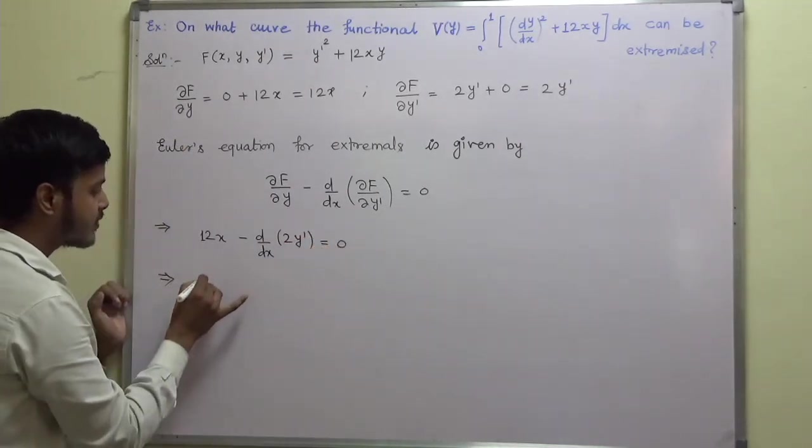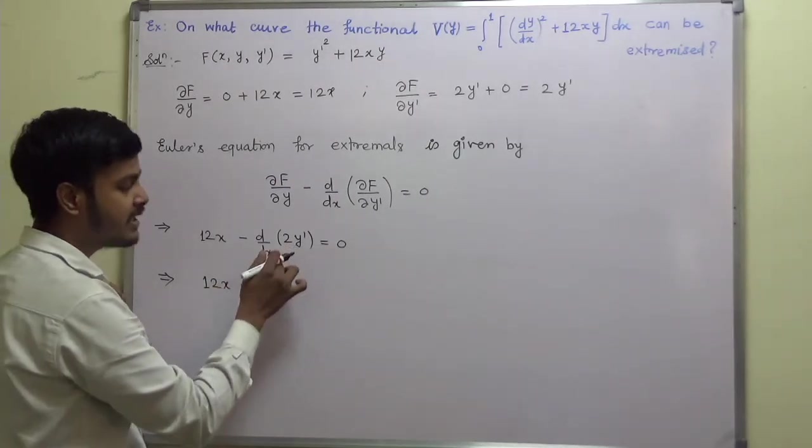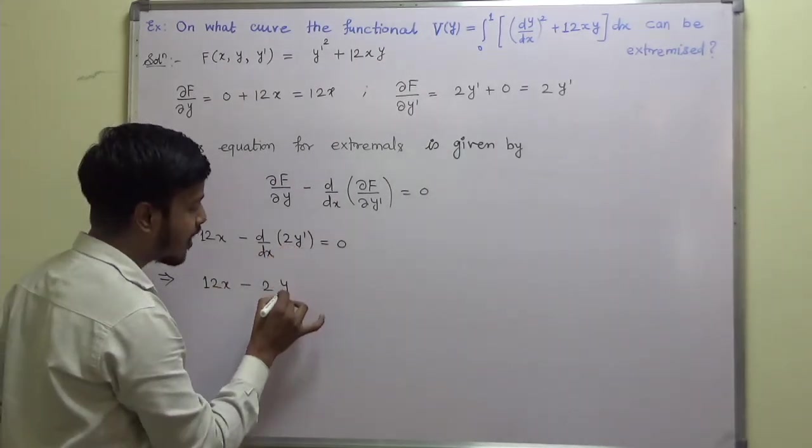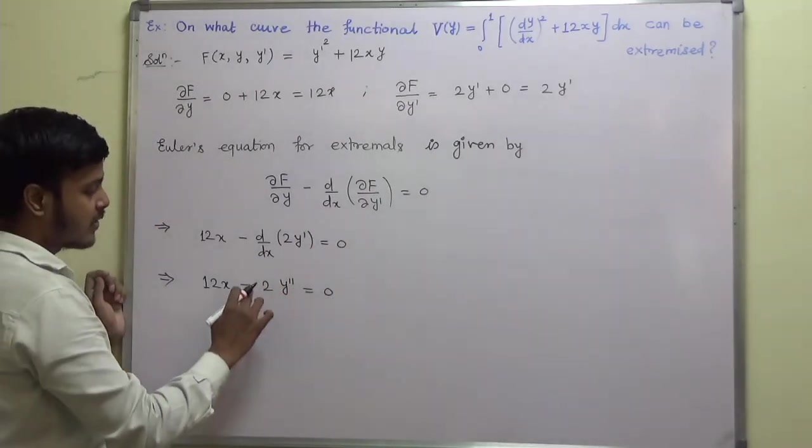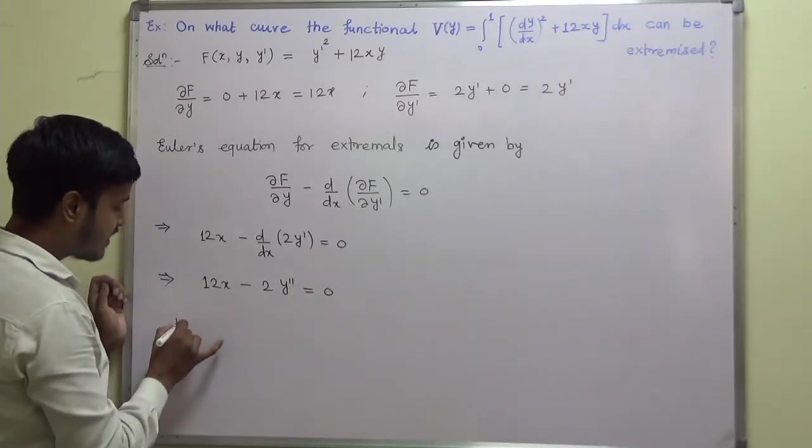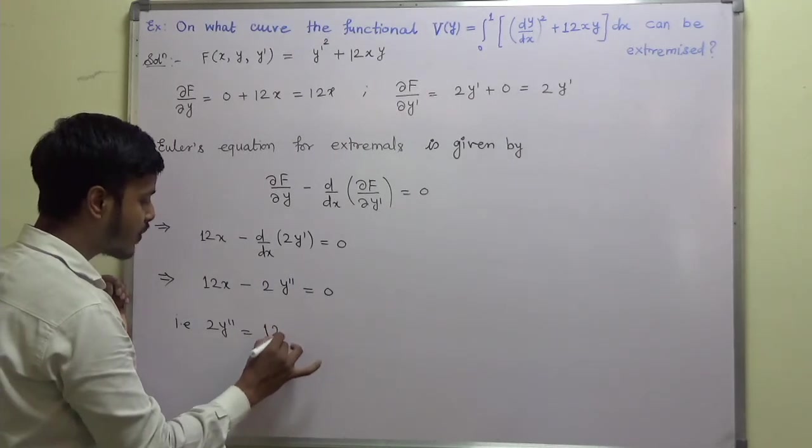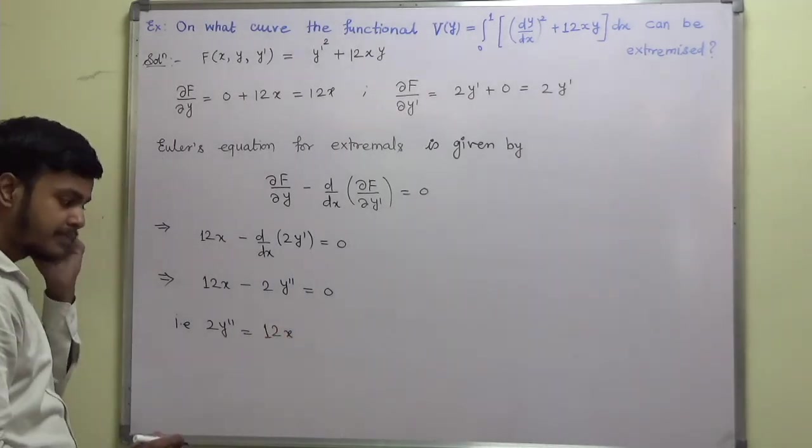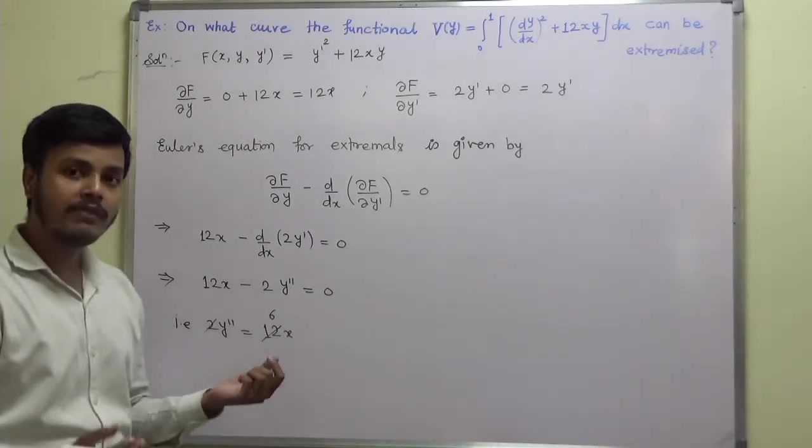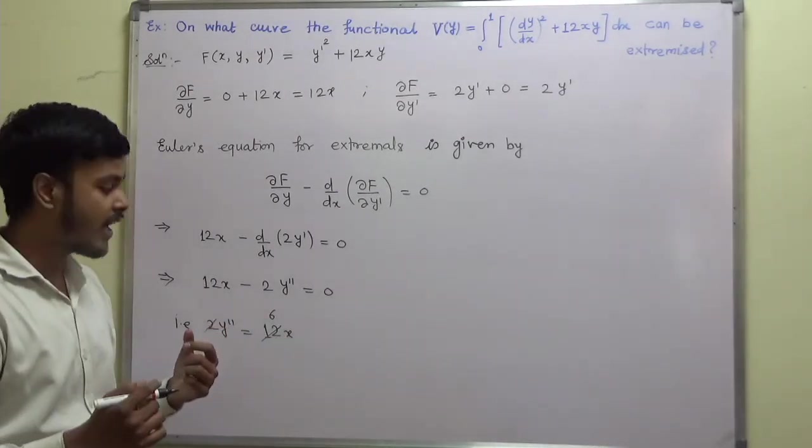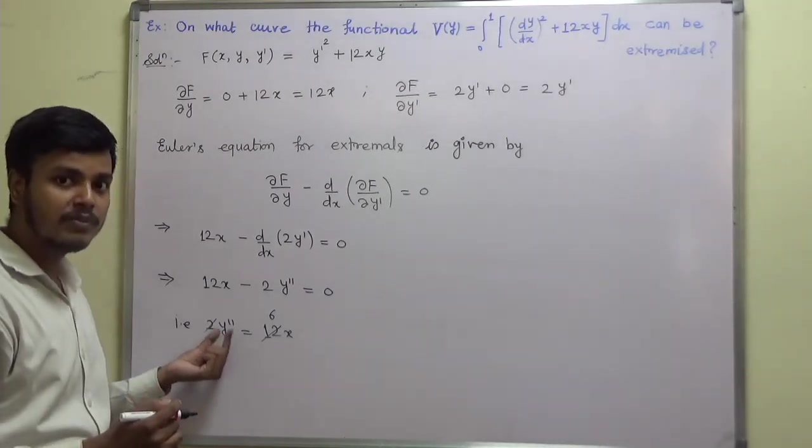Solving further to this, we will get 12x minus 2 times, what is d/dx of y'? y'' is equal to 0. So you can just take this 2 here and write it as 2y'' is equal to 12x. Now, you can just cancel out this. What we want? We want the curve y is equal to y(x). What we have? Derivative. So to remove the derivative, we will make use of integration.